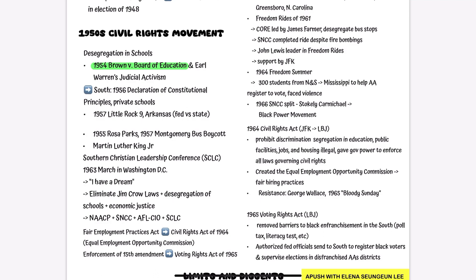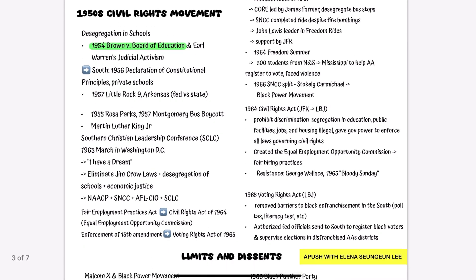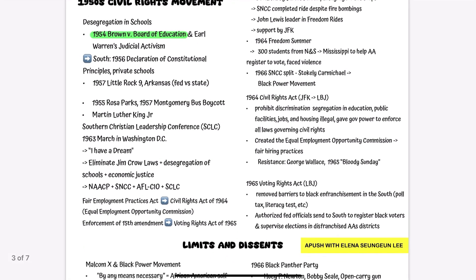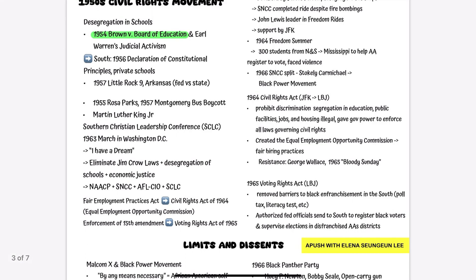In the case of Brown v. Board of Education, it said that 'separate but equal' was unconstitutional — this was basically judicial activism overturning precedent. However, not everyone embraced this ruling, because in the South, the 1956 Declaration of Constitutional Principles, also known as the Southern Manifesto, sought to resist desegregation efforts. Private schools emerged as an alternative to evade integration.